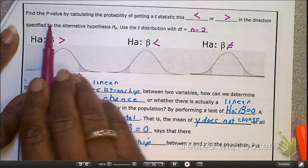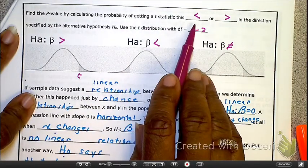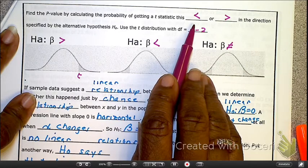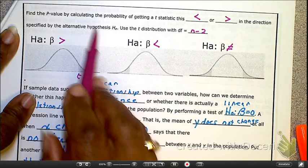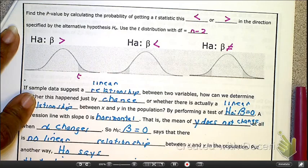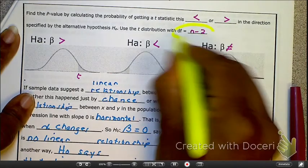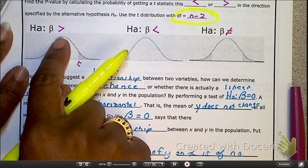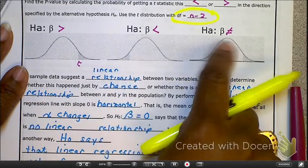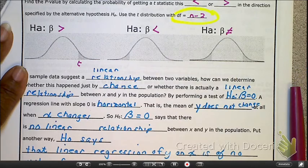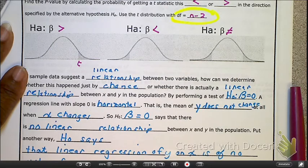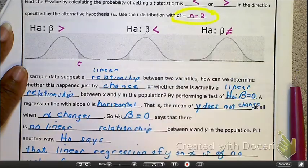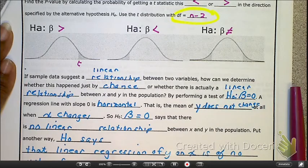So as before, in calculating the p-value, we're looking at whether it's going to be less than or greater than. And that direction helps us to make a determination on what the hypothesis test is. Our degree of freedom, remember, because we've got two variables, x and y, is n minus 2.